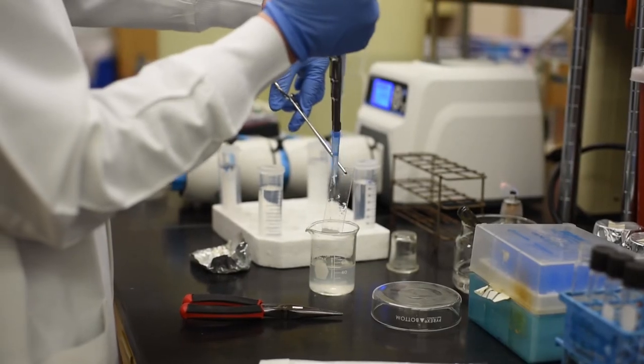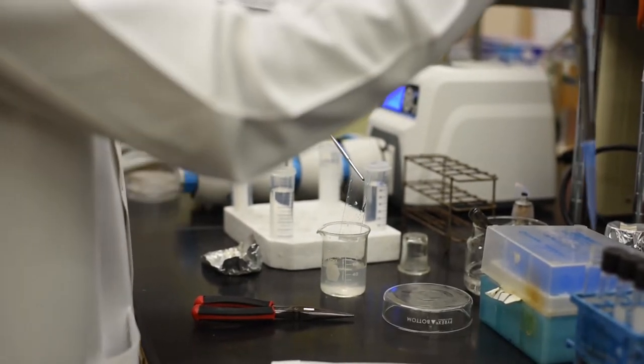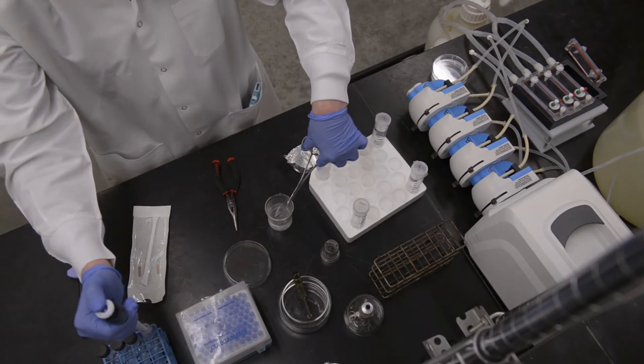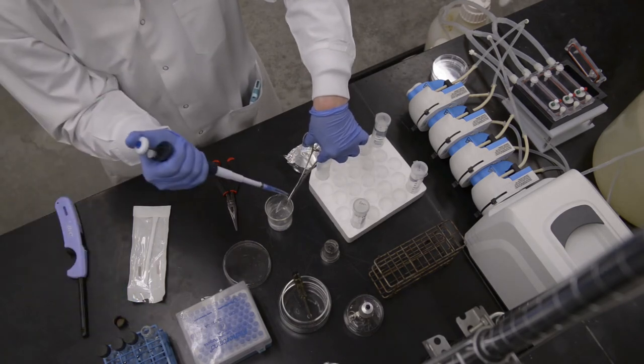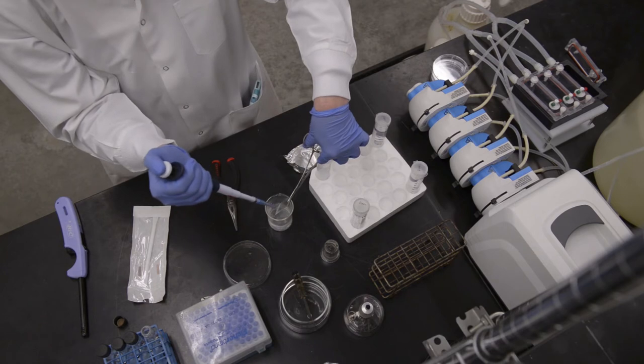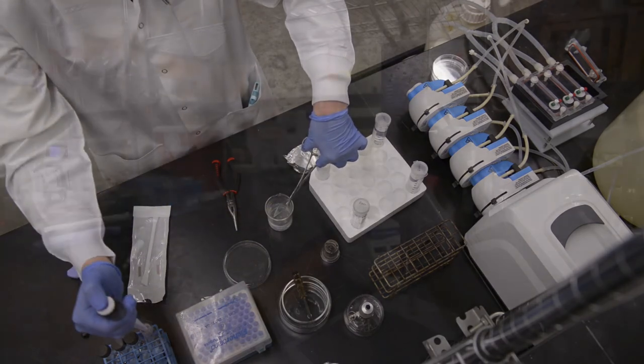Hold the slide at a 60 degree angle over the beaker and pipette five 1 milliliter volumes of sterile buffered dilution water over the slide surface. The total volume in the beaker is now 50 milliliters.